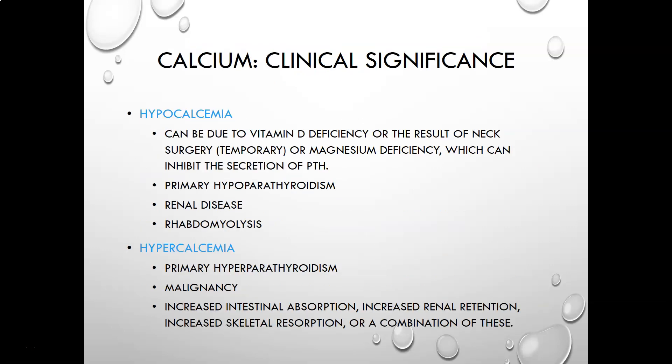Hypocalcemia, or low calcium levels, can be due to vitamin D deficiency or the result of neck surgery where the parathyroid glands are disturbed — usually temporary. It can also be due to magnesium deficiency, because magnesium deficiency inhibits the secretion of parathyroid hormone. It can be caused by primary hypoparathyroidism — not having enough parathyroid hormone — as well as renal disease and rhabdomyolysis.